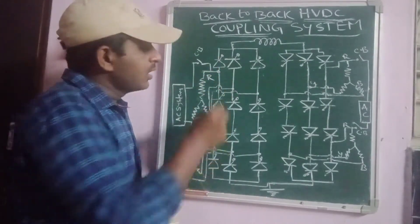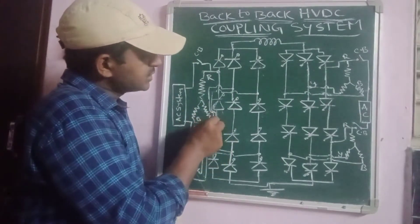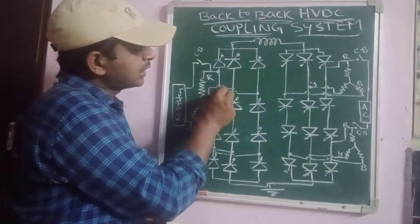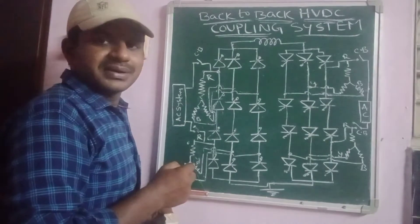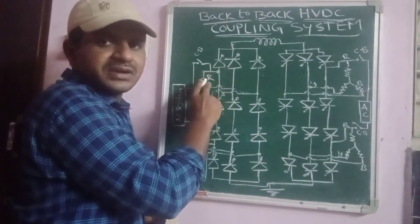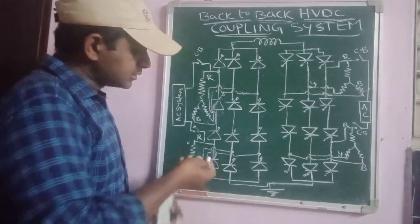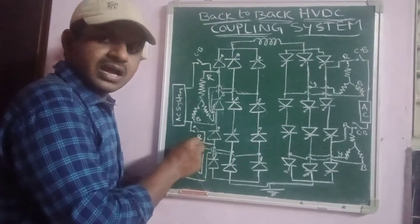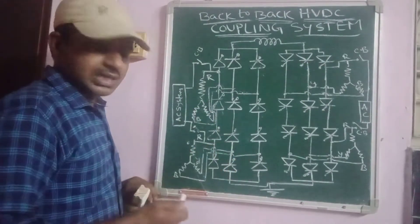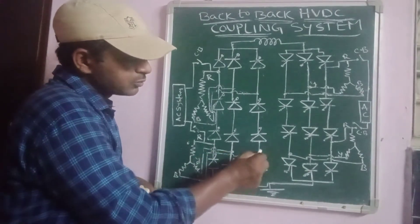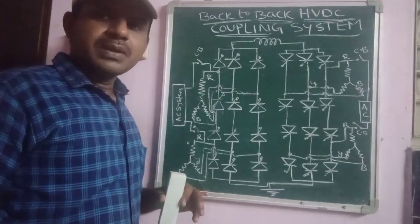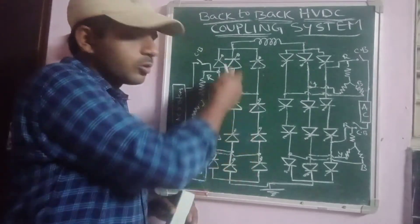The R phase of the transformer is connected to the R phase of the converter station, the Y phase of the transformer is connected to the Y phase of the converter station, and the B phase of the transformer is connected to the B phase of the converter station. Similarly, for the second transformer, R to R, Y to Y, and B to B connections are made. According to this connection, this is called a 12-pulse converter unit.